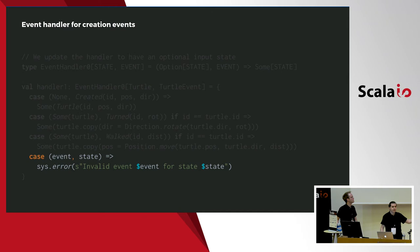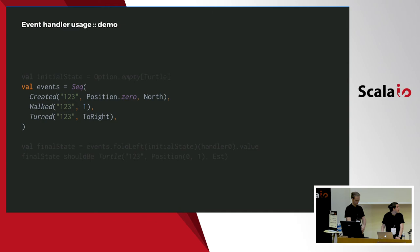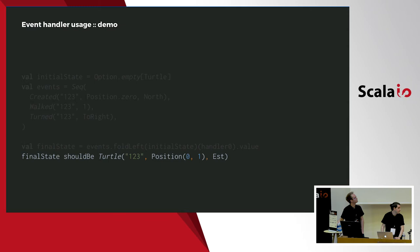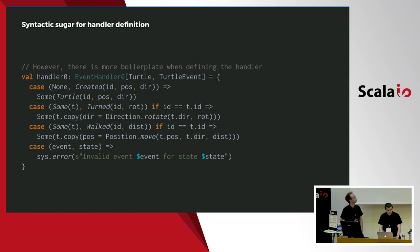For now it will just be an exception because it's simpler, but in a real application we can do better. How to use it? We have an initial state — None for now — and some events. We fold over the events using the handler we defined to get the final state, then test or use it. Note: we use the Some.value method and not Option.get, which you should never use. There is some boilerplate, but we can do better.